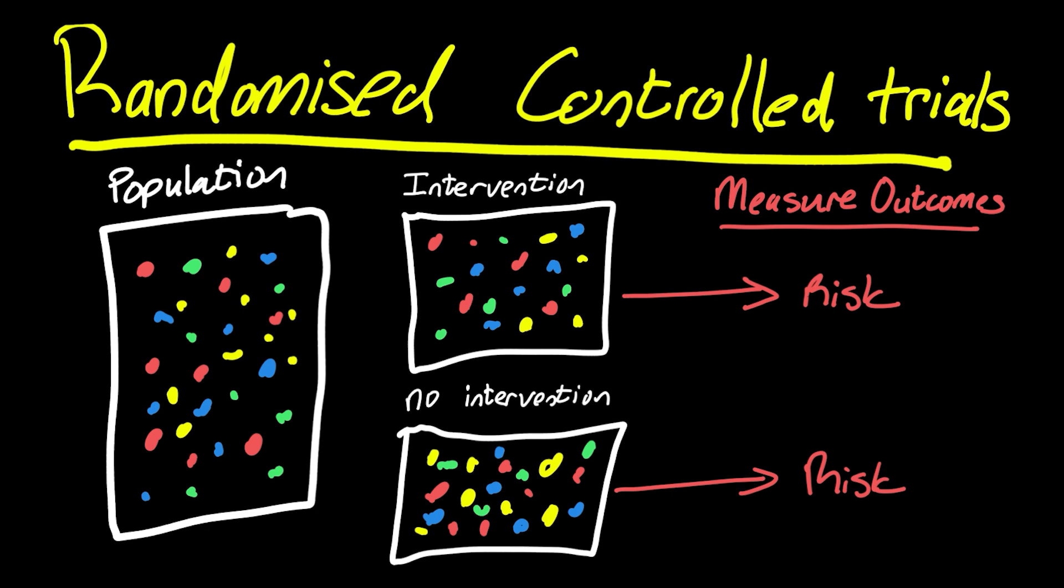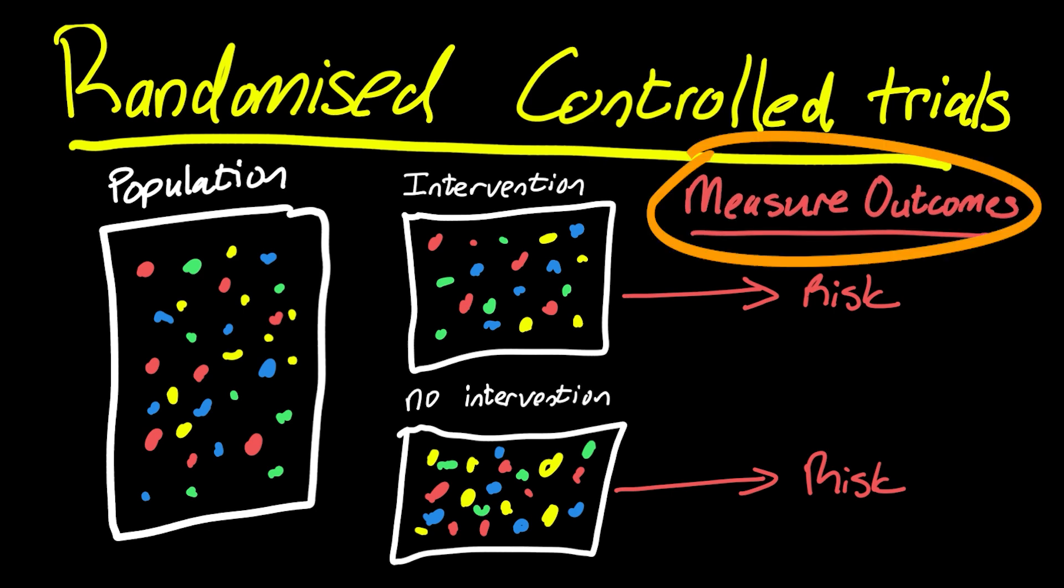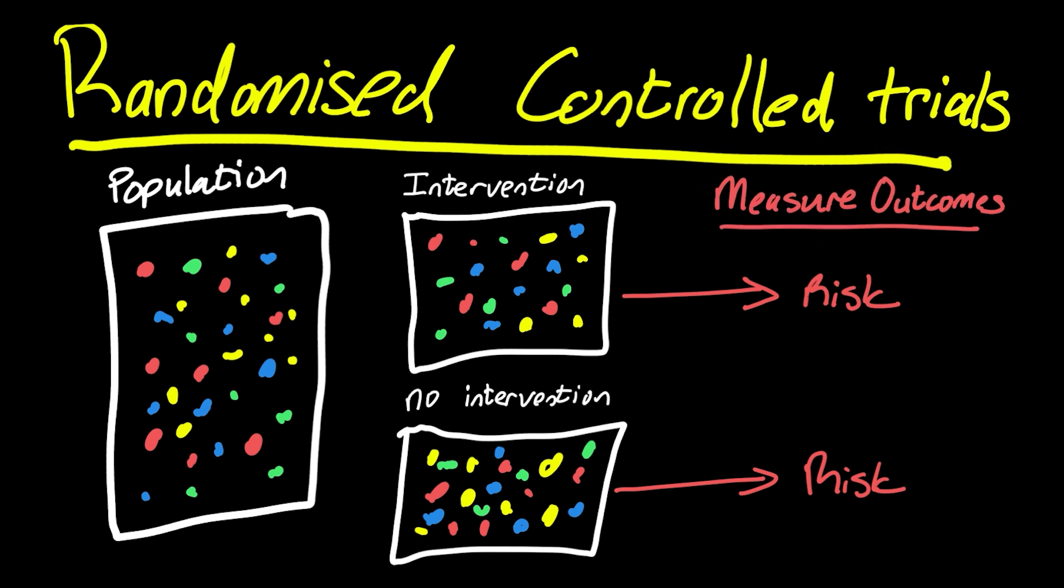Something gets done in that group, and that thing does not get done in the non-intervention group. And then of course, for both groups, we measure the outcomes, the extent to which an outcome of interest occurred or didn't occur. Now, what is powerful about these things is this: